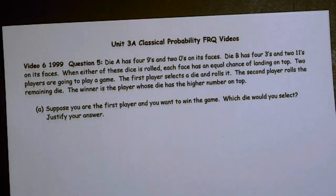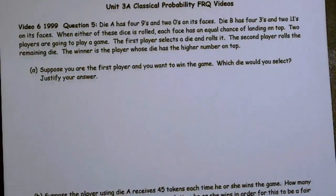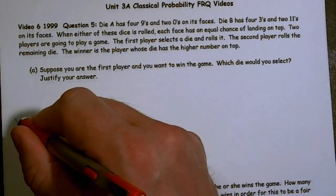Two players are going to play the game. The first player selects a die and rolls it. The second player rolls the remaining die. The winner is the player whose die has a higher number. Suppose you are the first player and you want to win the game — which die would you select? Which one has a greater likelihood of winning? So I'd go about setting a sample space up.